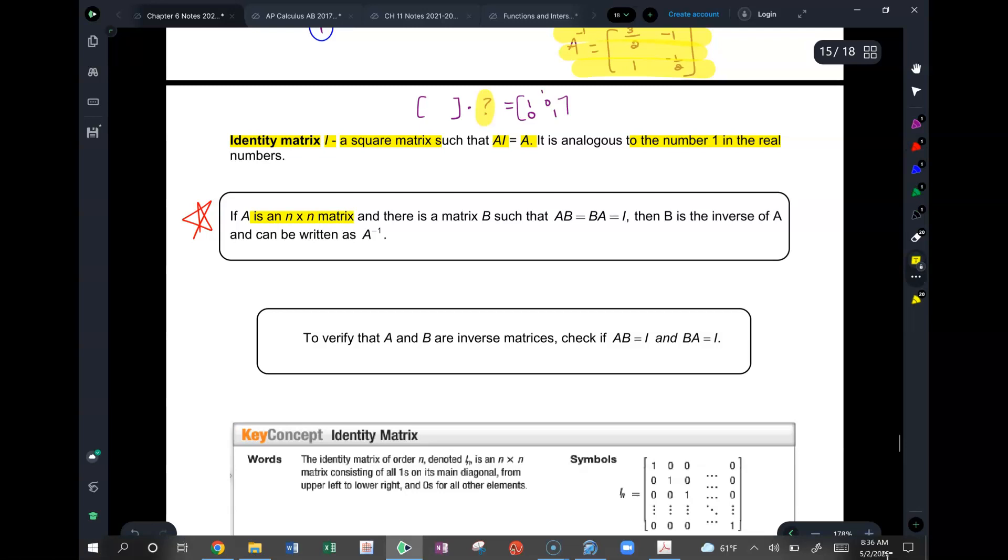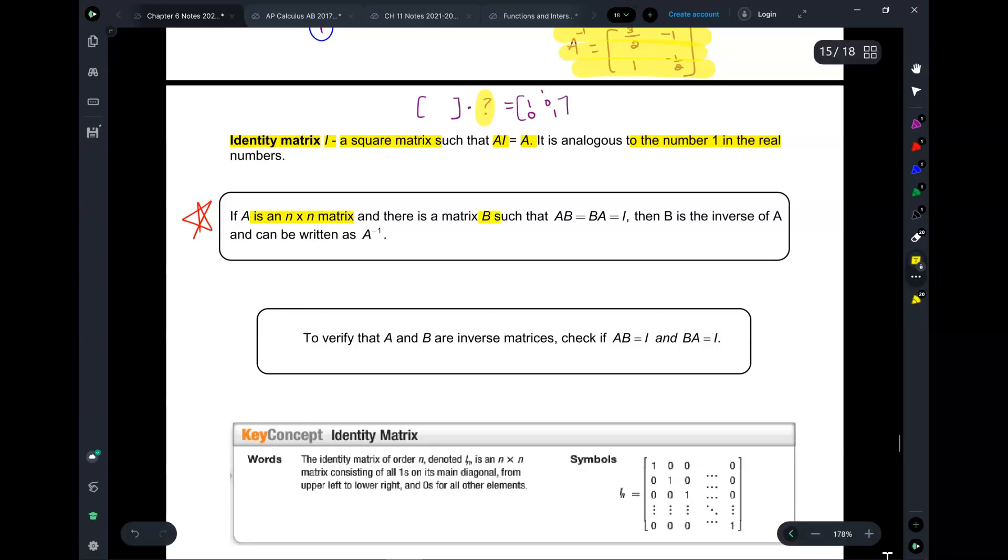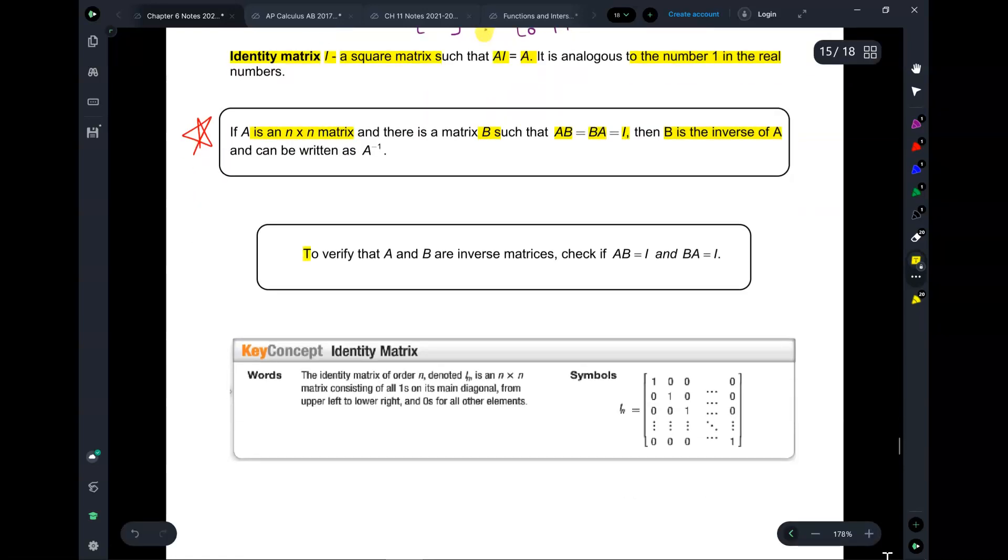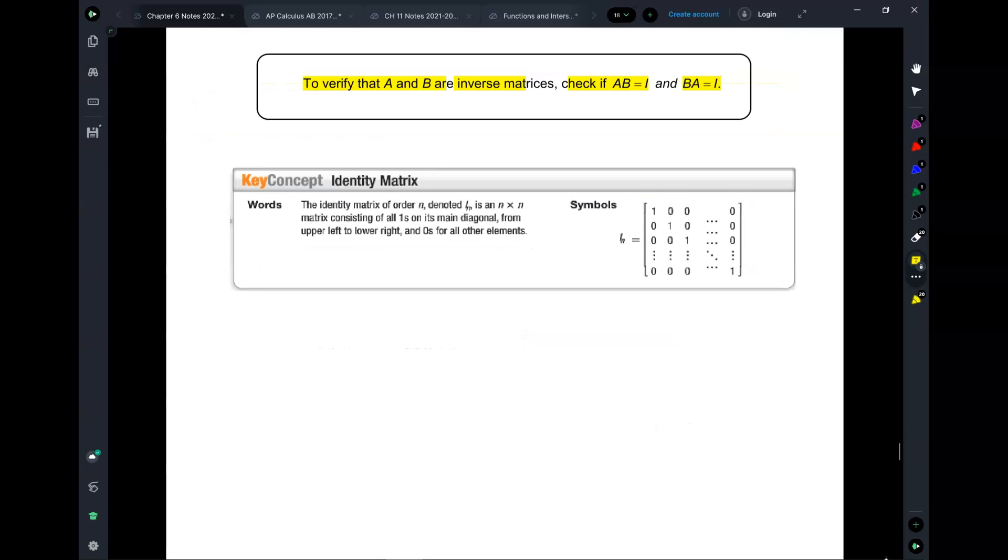But this here is what I want you guys to focus on. If A is an n by n matrix, and if B is another matrix, and if you multiply A times B and you get the identity matrix, and if you multiply B times A and you get the identity matrix, then B is the inverse of A. To verify that A and B are inverses, you check if A times B is identity, and B times A is identity.